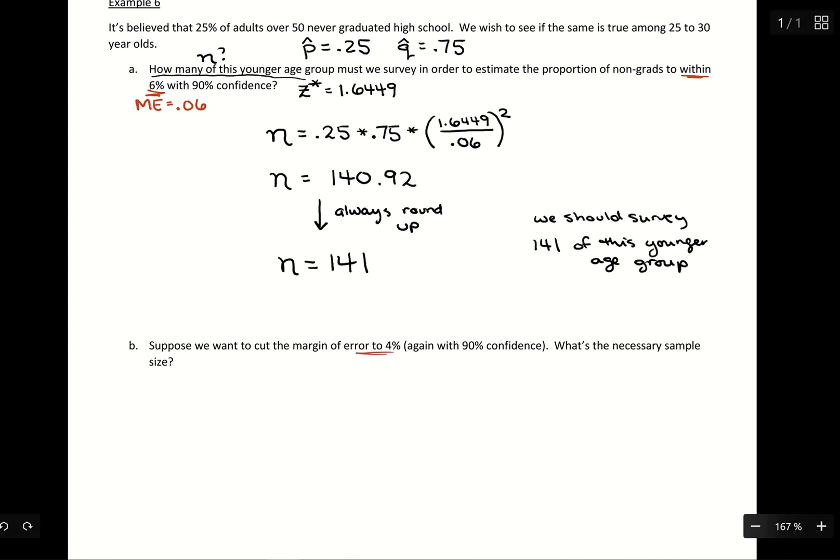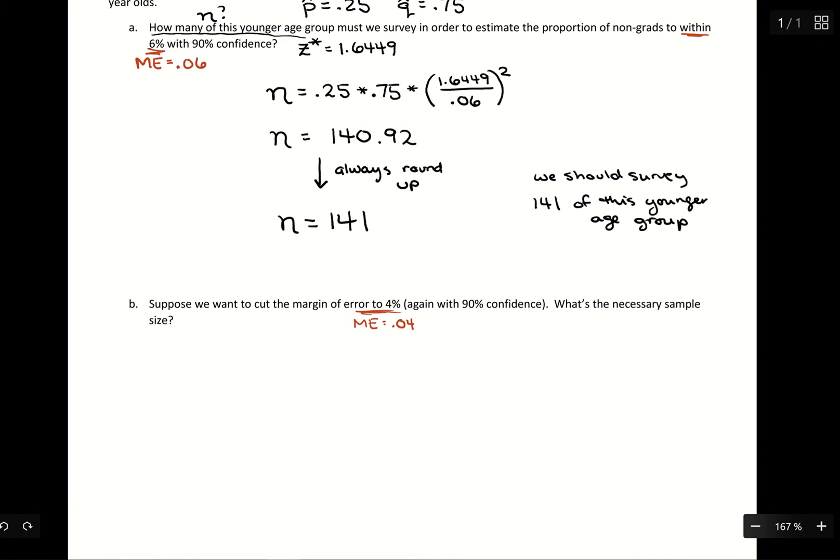So now we're going to have margin of error of 0.04. So with our formula, we'll have 0.25 times 0.75 times that 1.6449 over 0.04 now squared.